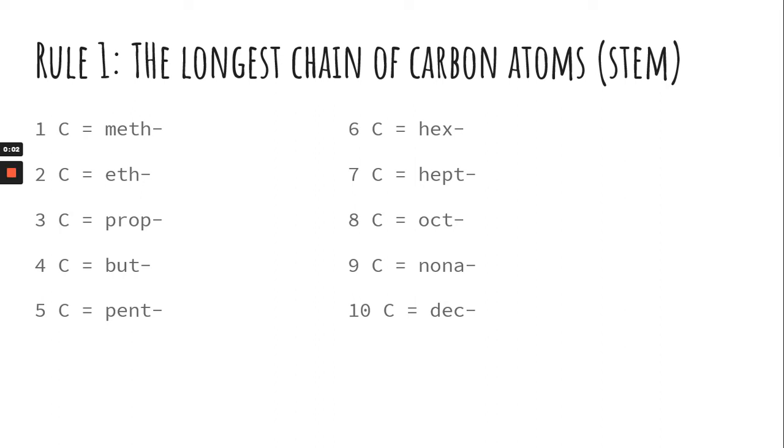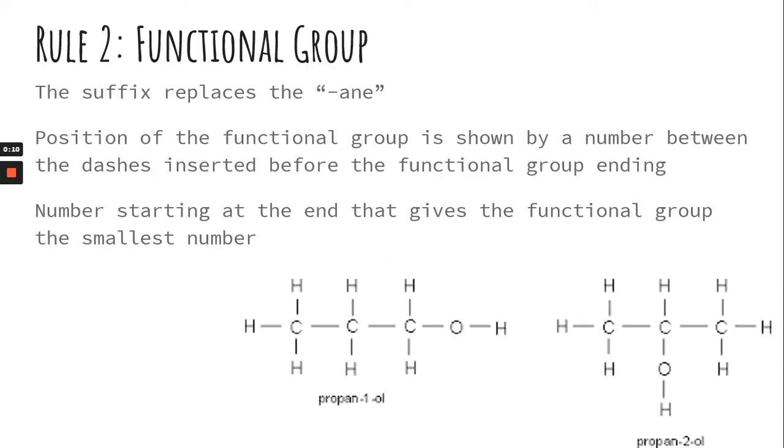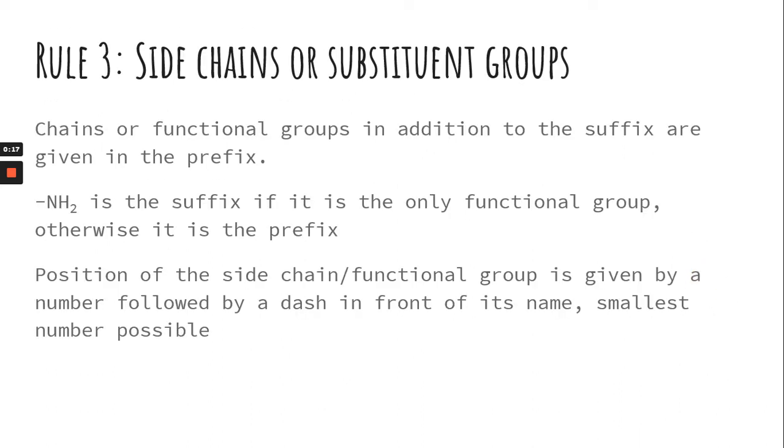All right, so again, you want to start with the longest possible chain, and that's going to give you the stem of your word, of your name. Then you look for the functional group. Make sure the functional group has the smallest number possible. Then you can look for chains, side chains, or substituent groups.